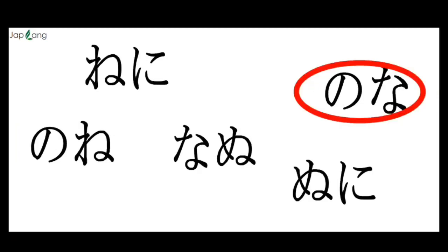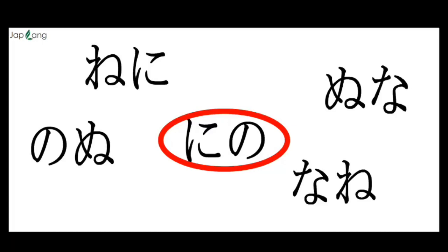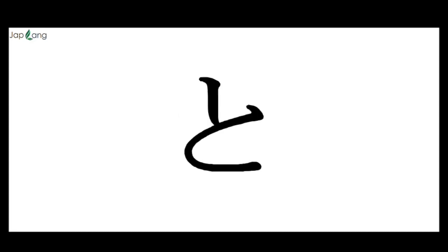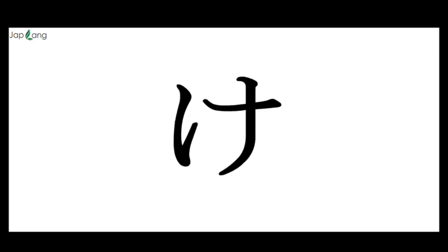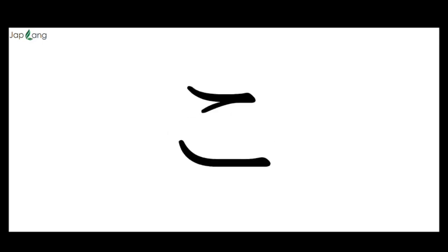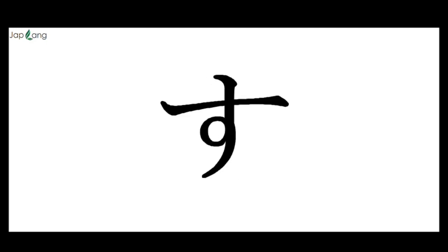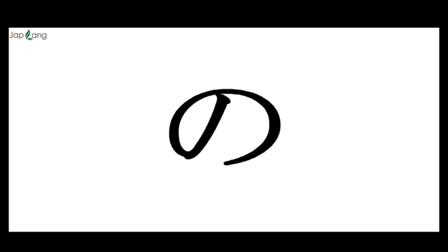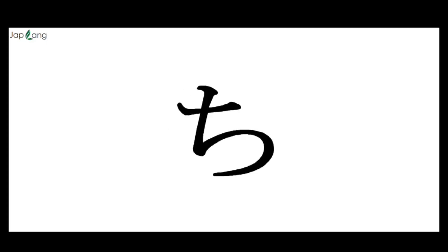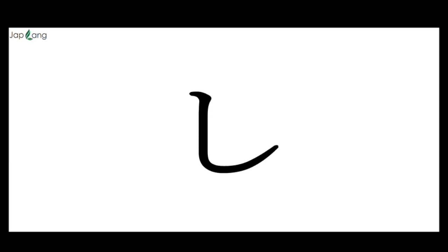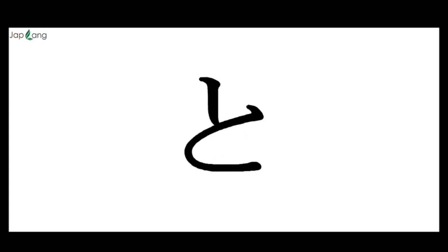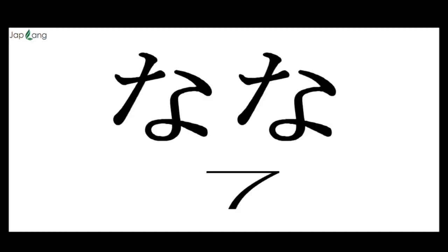Let's review from the A group all the way through to the NA group. Reading through the characters: NI, TSU, SO, NI, TO, NA, TE, NA, KE, NO, CHI, KO, TSU, SO, NI, SU, TA, O, NI, TA, KO, NO, I, SHI, SE, CHI, I, NU, SHI, A, NA, U, SA, A, TE, KA, TO, NE, E, NA.